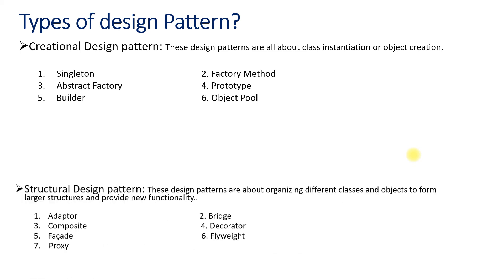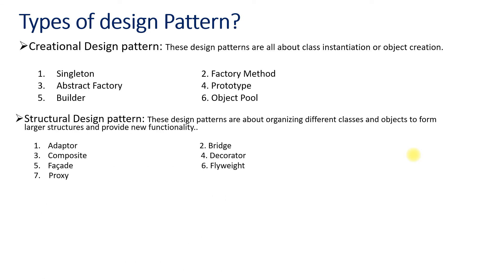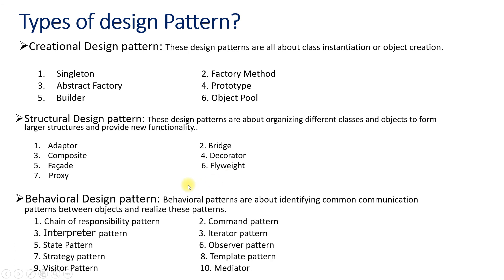The second type is the Structural design pattern. These design patterns are about organizing the different classes and objects to form a larger structure and provide new functionalities. The parts of the structural design patterns are: Adapter, Bridge, Composite, Decorator, Facade, Flyweight, and Proxy design pattern.